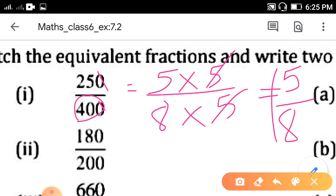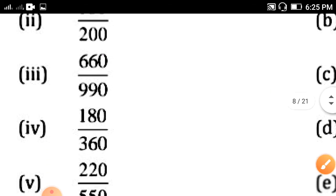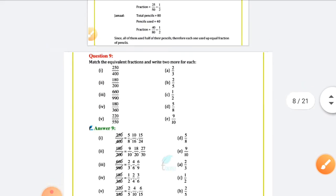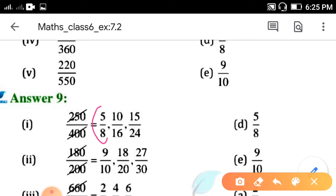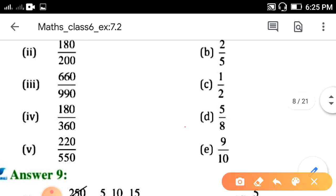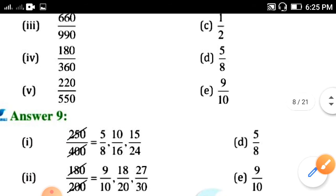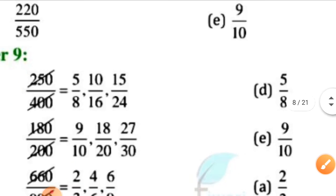So, check the answer. What is our first answer? 5 upon 8, that is the first answer. Which option is correct? D. And 2 more fractions, we need to write equivalent.